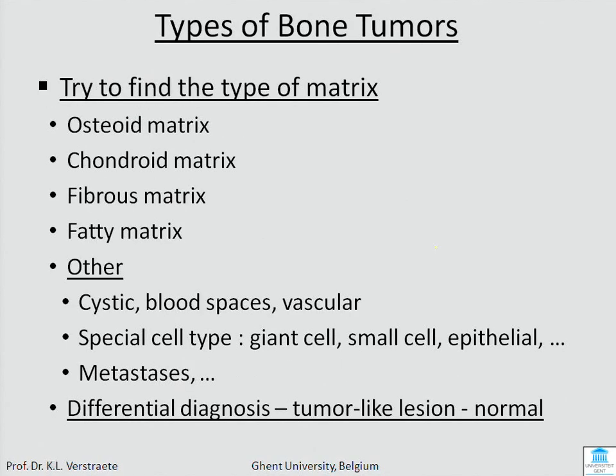When you see a bone tumor on an X-ray, you should try to find the type of matrix. Is it bone? Is it cartilage? Is it fibrous matrix? Is it fat, or is it something else? Then you should try to make a differential diagnosis — is it a tumor, a tumor lesion, or is it normal?